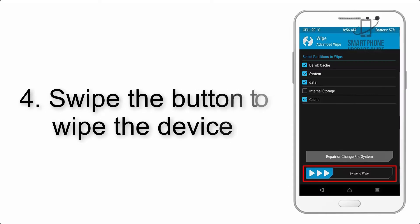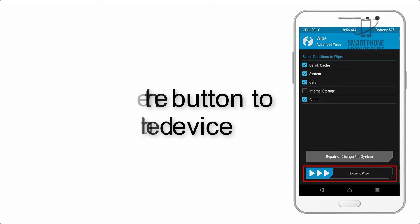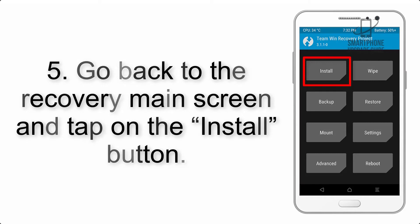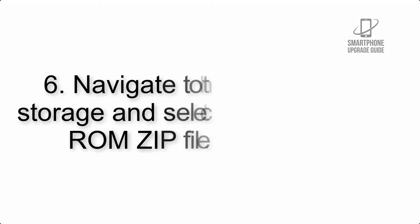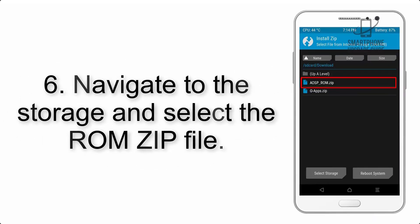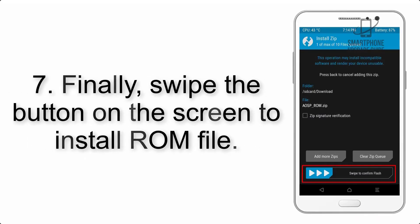Step 4: Swipe the button to wipe the device. Step 5: Go back to the recovery main screen and tap on the Install button.